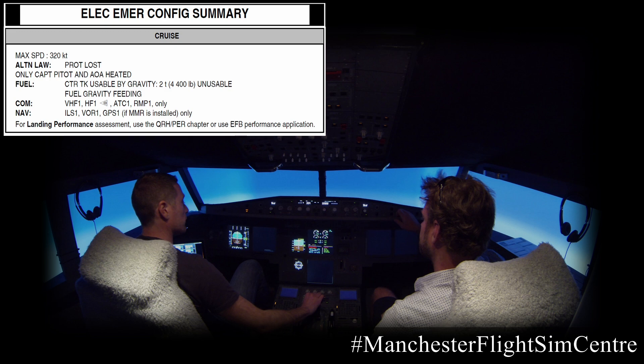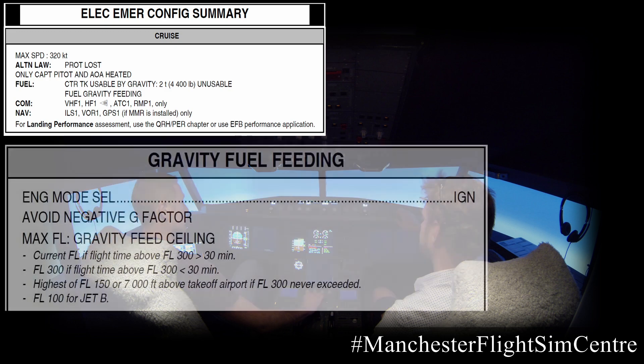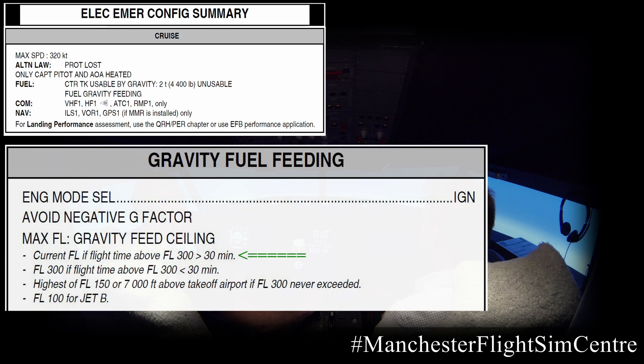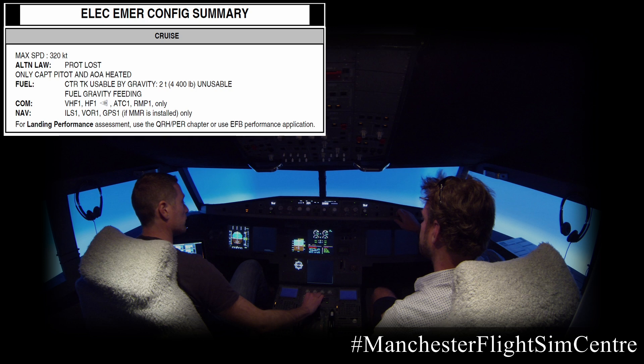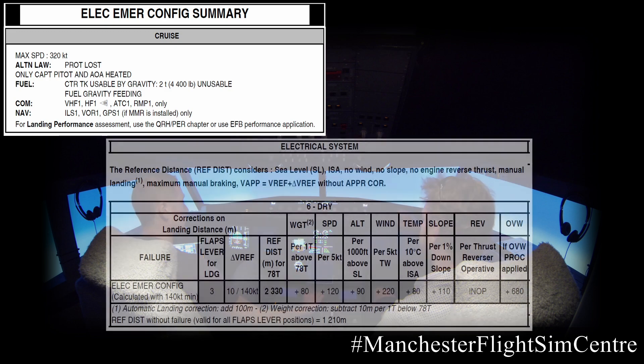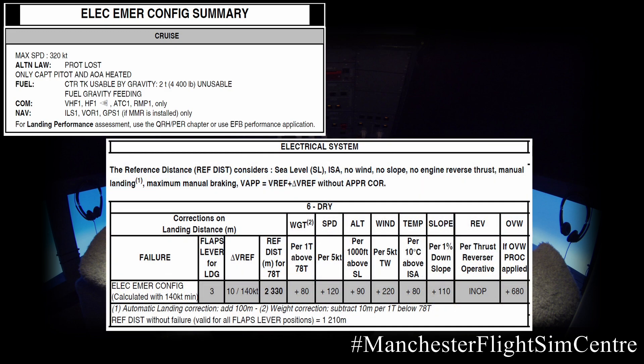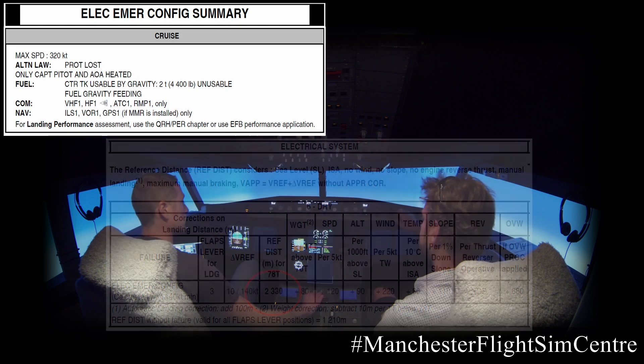This summary is broken down into phases of flight and gives guidance on limitations and flight capability, supporting crew decision making. First, the cruise phase. During the ECAM procedure we established our fuel gravity ceiling and we know we can maintain flight level 320 for the remainder of the flight. Note: the centre tank is unusable by gravity, but given we're in the later stages, there's no fuel remaining there. The landing distance performance drives us to the QRH or appropriate performance tool — the overriding point being that the landing distance is going to be considerable.